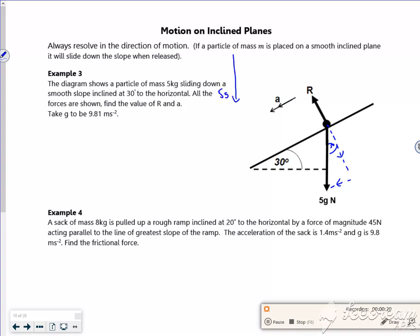Because I've got more room, so next to the angle is 5g cos 30, opposite the angle is 5g sin 30.